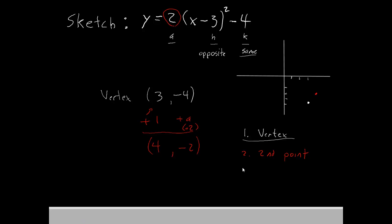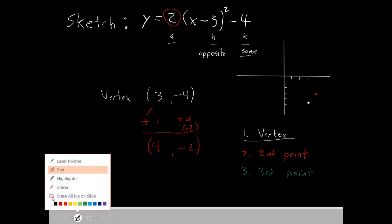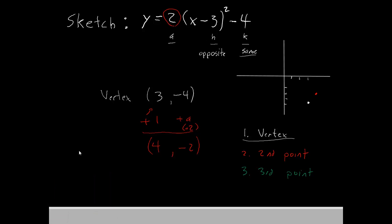If you wish, you can also make a third point, just to help you draw the parabola a little bit easier. Once again, we're going to start from the vertex 3, negative 4.